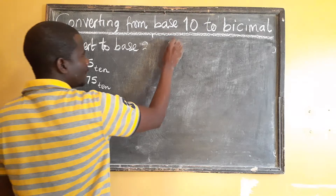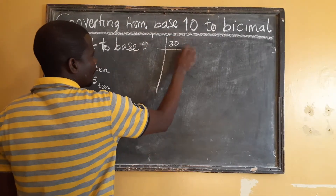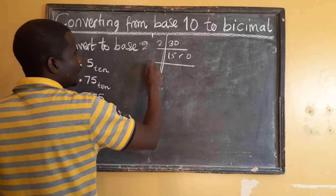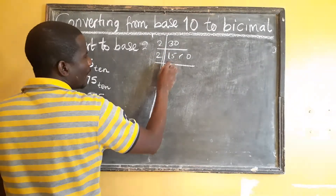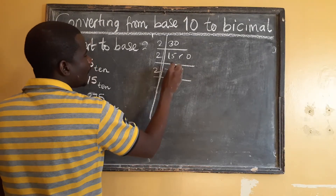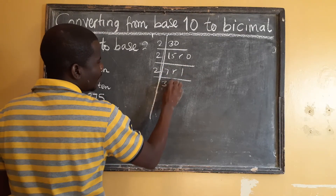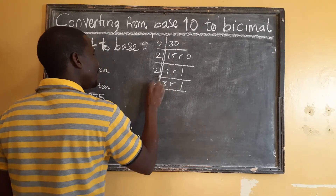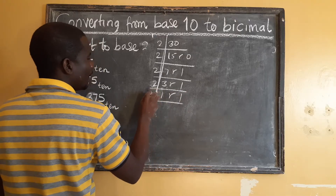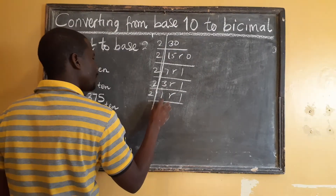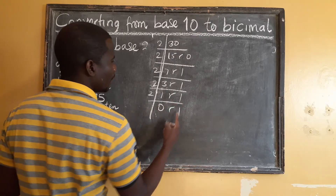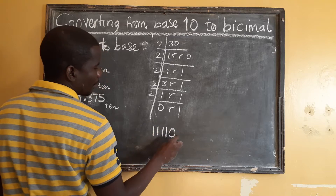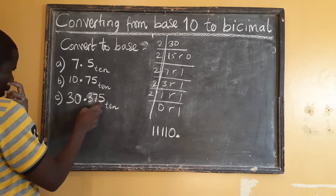Now let's look at the last one. The whole number is 30: 30 ÷ 2 = 15 remainder 0; 15 ÷ 2 = 7 remainder 1; 7 ÷ 2 = 3 remainder 1; 3 ÷ 2 = 1 remainder 1; 1 ÷ 2 = 0 remainder 1. Reading remainders going up we get 11110 — that is the whole number part.